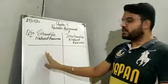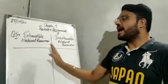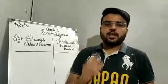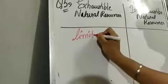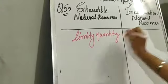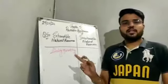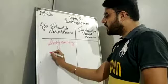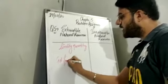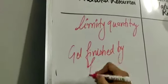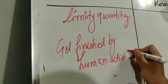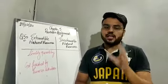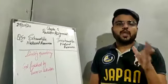Question number five: differentiate between exhaustible natural resources and inexhaustible natural resources. Exhaustible natural resources are the resources which are present in limited quantity in nature, and they can be finished by human activities.